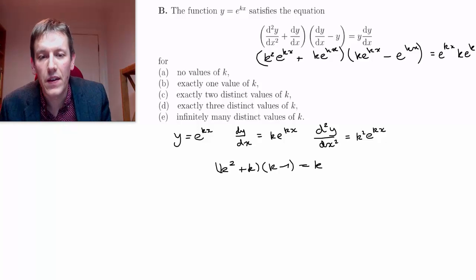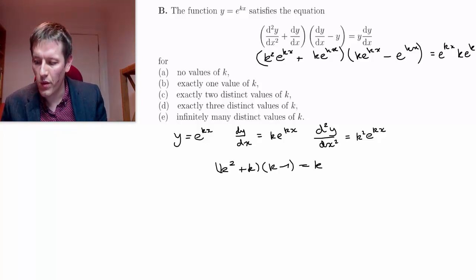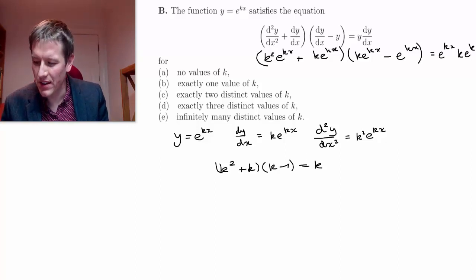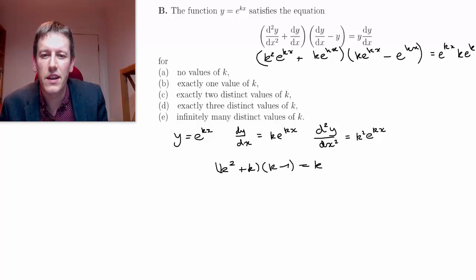And then if we multiply this out, well, actually, you could just multiply it all out and then try and refactorize it. Perhaps we can be slightly tricky here and just start by factorizing it. I've got k, k plus 1, k minus 1 equals k.